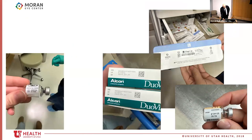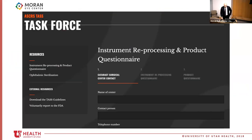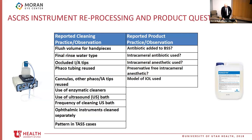The challenge with TASS is that so many causes can trigger it, making it difficult to identify what's causing an actual outbreak. As Dr. Ali Simpson's presentation showed, you have to account for essentially everything in the OR. This is where the task force survey comes in — it asks specific questions about cleaning practices and products used to streamline the search process and identify potential TASS causes in a facility, including cleaning products used, reuse practices, and substances injected intracamerally.